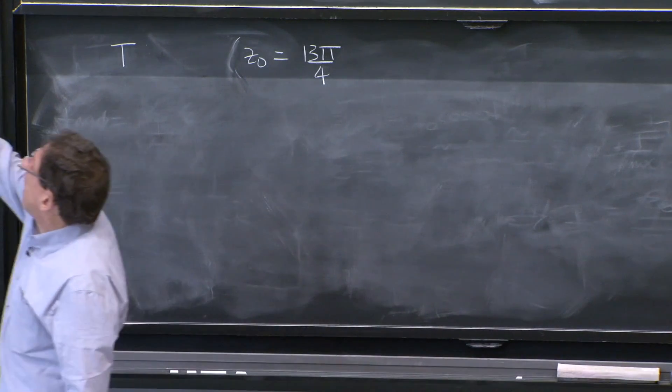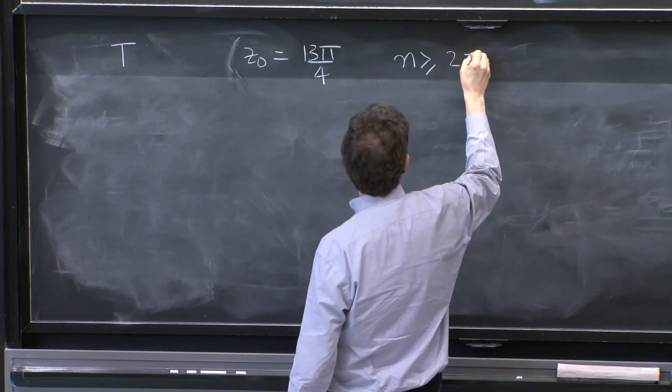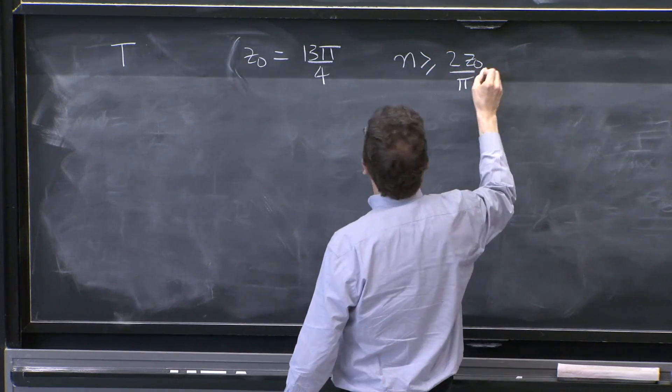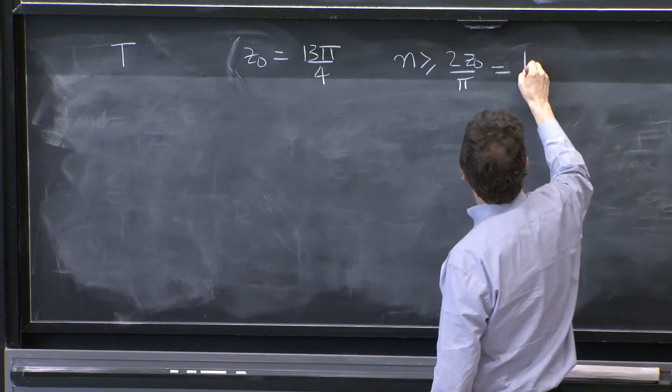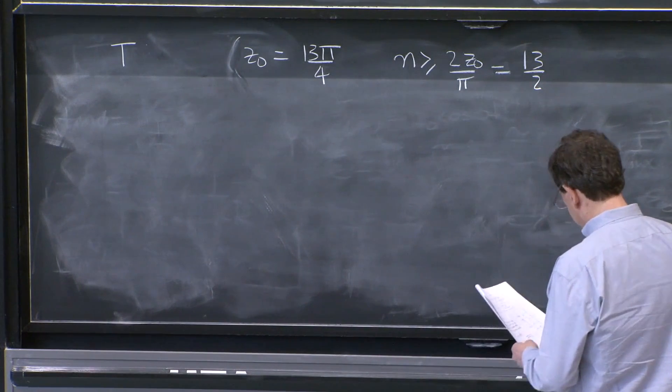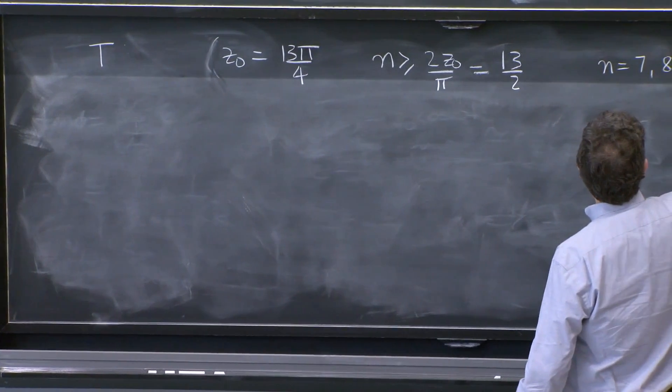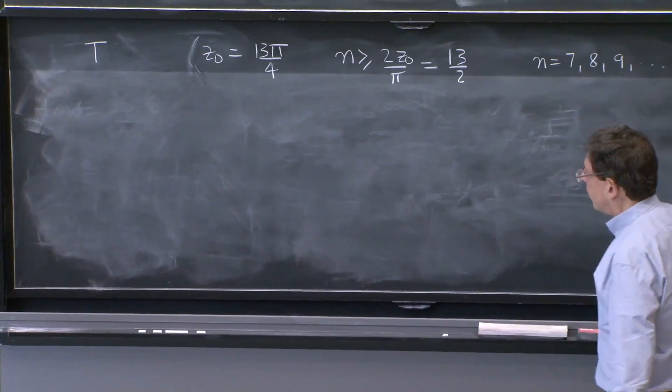Remember, n must be greater than or equal to 2z0 over pi. So this would be 13 halves. And 13 halves means that we can start with n equals 7, 8, 9, and all those.